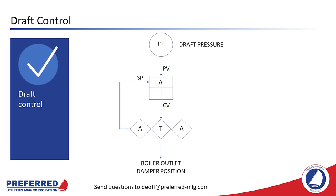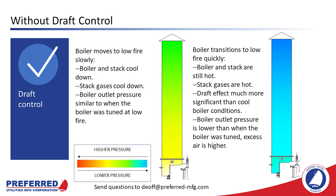This is a simple SAMA diagram that shows the control function inside a draft controller. To illustrate how draft control works and why it's necessary, we're going to do a thought experiment like Einstein used when he came up with the theory of relativity. We'll illustrate draft pressure using color: green is ambient, hot colors are positive pressure, and cool colors are negative pressure.